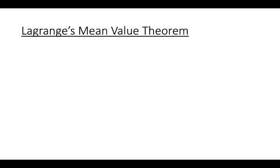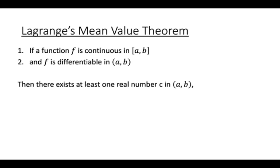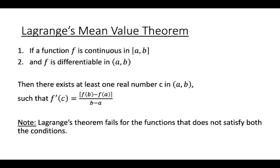Now, Lagrange's mean value theorem: if a function f is continuous in the closed interval [a, b] and derivable in the open interval (a, b), then there exists at least one real number c such that f'(c) = [f(b) − f(a)] / (b − a).